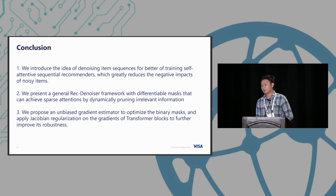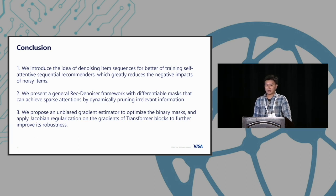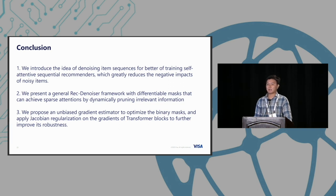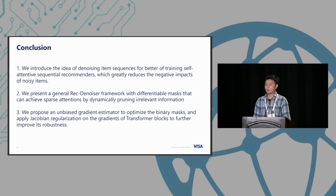In conclusion, we introduce the idea of denoising item-item dependencies for better training self-attention sequential recommendations, which largely reduces the negative impact of noisy items. We propose a general framework with a differentiable mask to achieve sparse patterns, learnable end-to-end in a totally trainable manner. We also propose a binary gradient estimator to optimize our binary mask, plus Jacobian regularization to improve transformer robustness. In the original paper, we also insert 10% noise items not in the original training set, and as the noise rate increases, our model still maintains reasonable performance compared to original transformers.